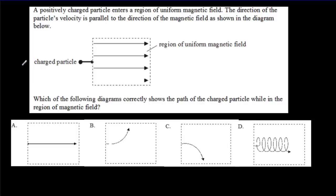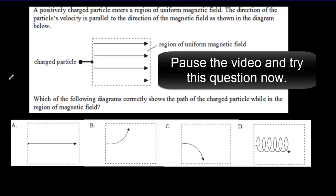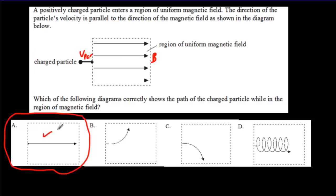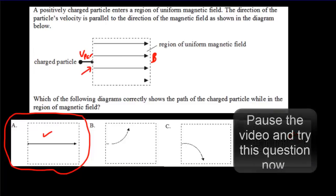Here's an IB question about exactly that topic — pause the video, read the question, try it, and come back for the answer. Hopefully you said the answer is A, because in this case all the velocity is parallel to the magnetic field. That means there's not going to be any magnetic force whatsoever, and the particle is just going to keep doing what it's doing because it's not being acted upon by any force. If we were to come in at a bit of an angle, then of course we would get the helical answer.